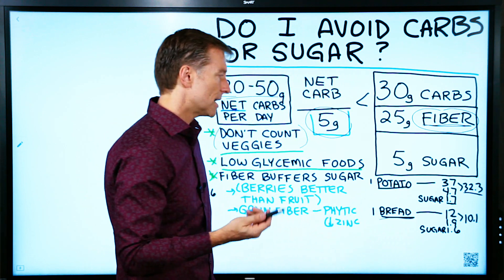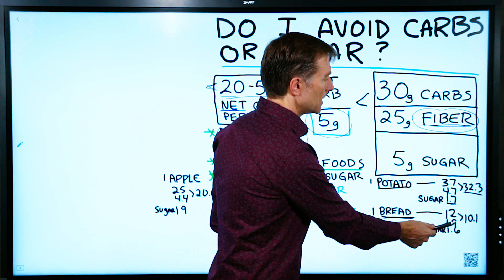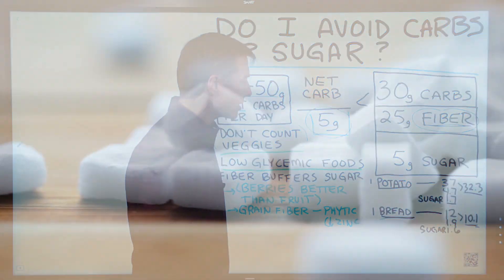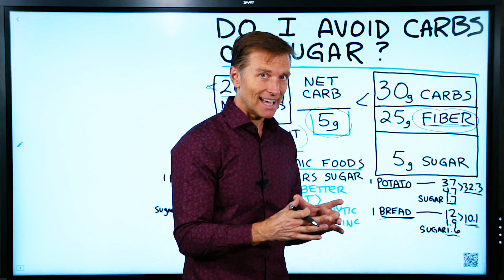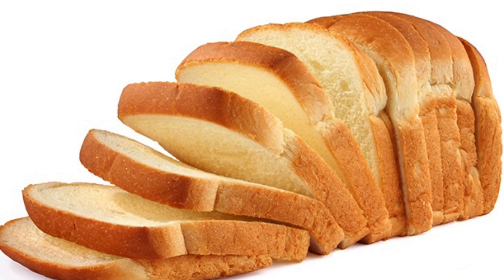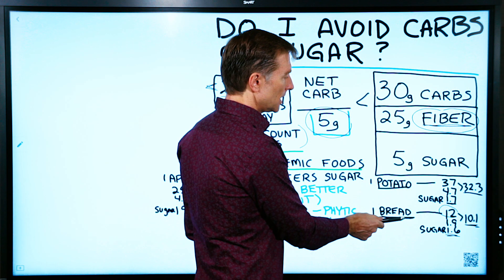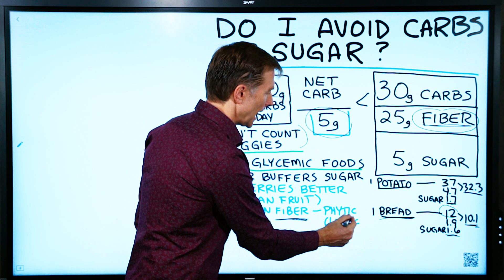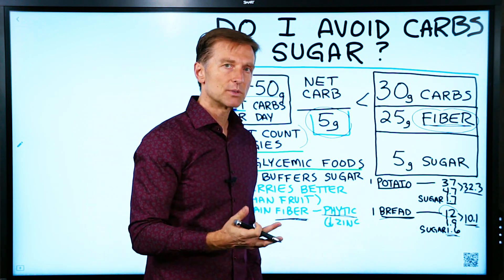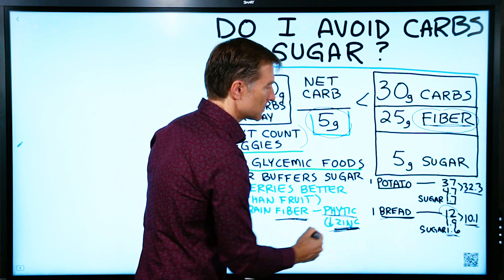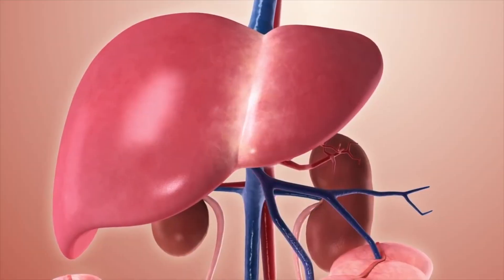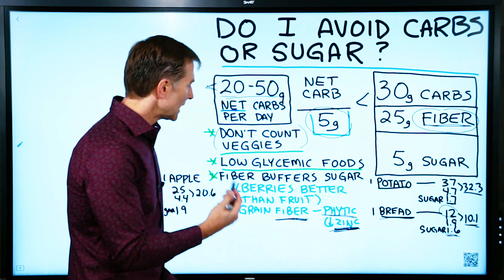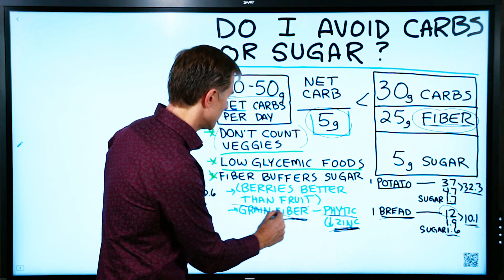Let's take bread. One slice has 12 grams of carbs, 1.9 grams of fiber, giving a net carb of 10.1 — and that's just one slice. The problem with bread is not only is it high on the glycemic index, but the specific fiber in grains contains phytic acid, which depletes certain minerals, definitely zinc. On top of the glycemic effect, there's also gluten, which a lot of people are sensitive to. So on a keto plan, we don't recommend grain or grain fiber. Get your fiber from vegetables instead.